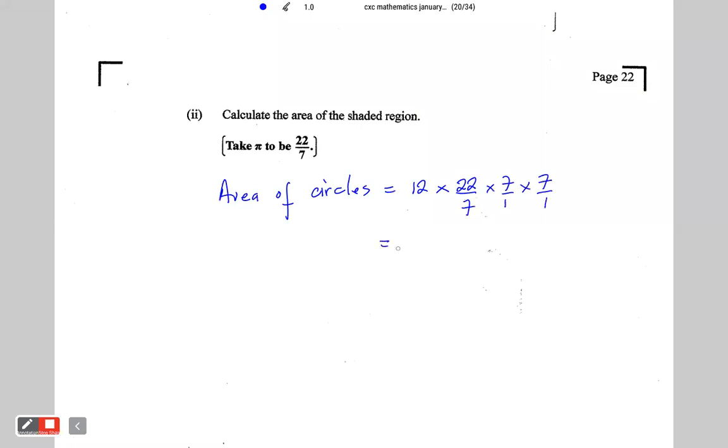So this is 12 times 154. So 12 times 154 and this is 1,848.